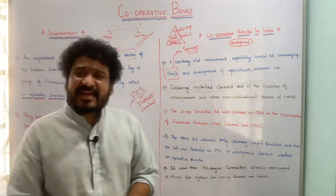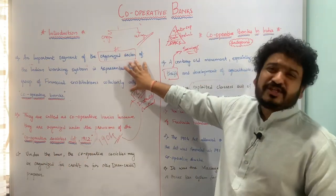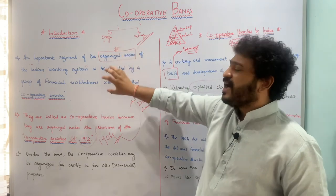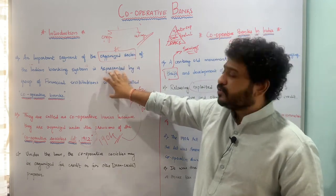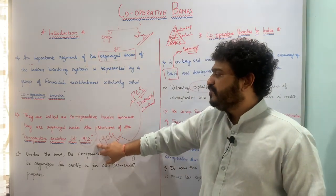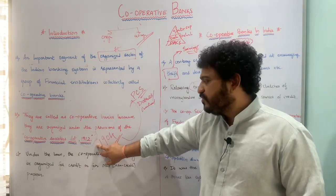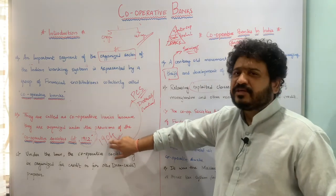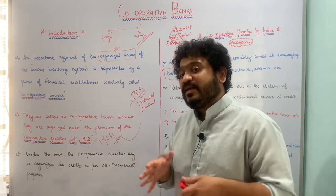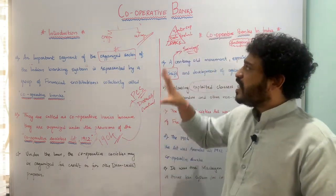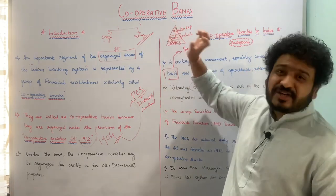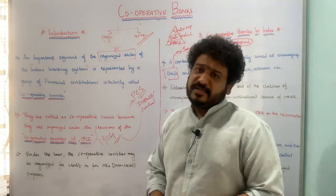There are specialized institutions which are part of the organized sector collectively called as cooperative banks. They are called cooperative because they are under the purview of the Cooperative Societies Act of 1912 or 1904. Cooperative societies can be for both credit as well as non-credit purposes. In the next class, I will be talking more about the structure of cooperative banking in India, so please stay tuned.